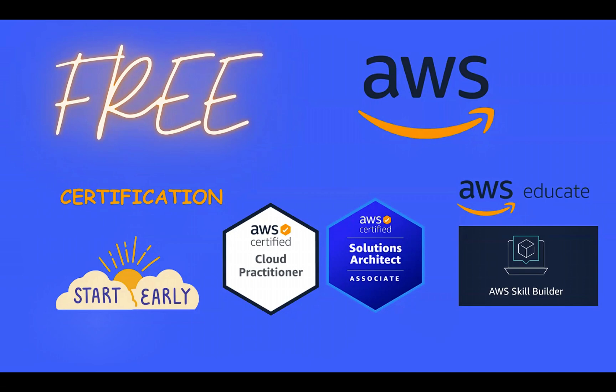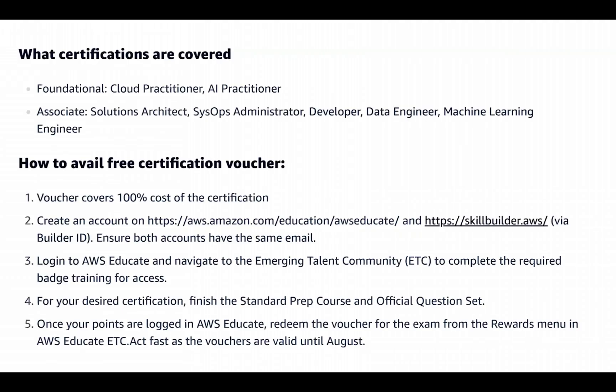You can also go ahead with the Solutions Architect Associate. Two things you have to do: first, make an account with AWS Skill Builder, and then get an account with AWS Educate. The certifications covered include foundational ones — Cloud Practitioner and AI Practitioner — or associate ones: Solutions Architect, SysOps, Developer, Data Engineer, and Machine Learning.